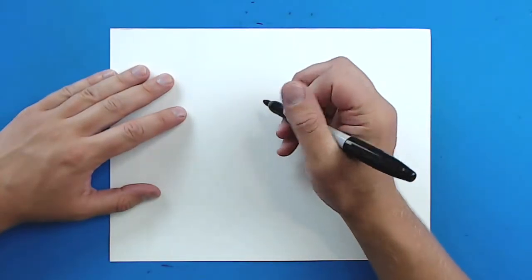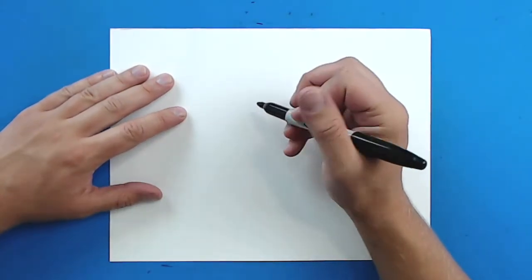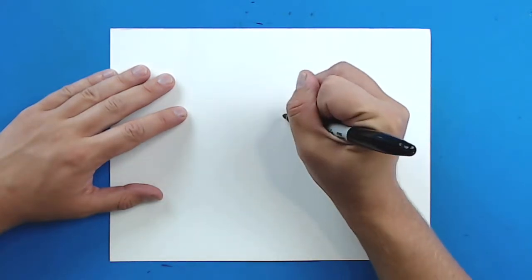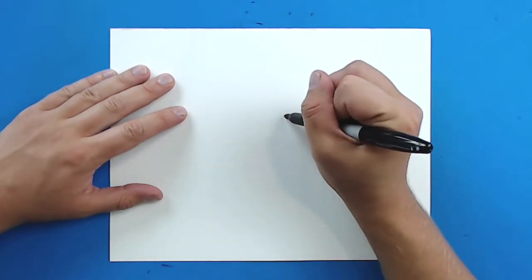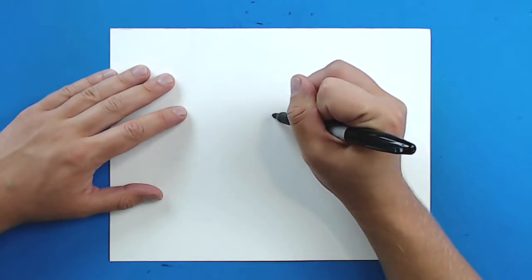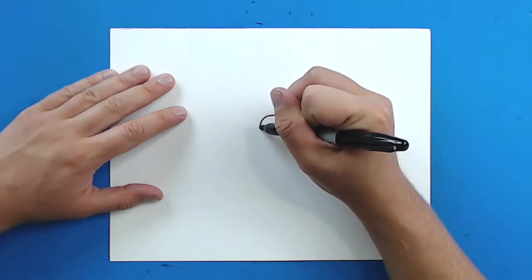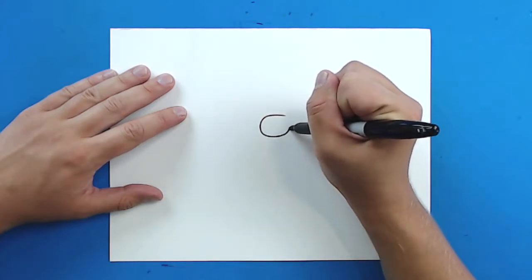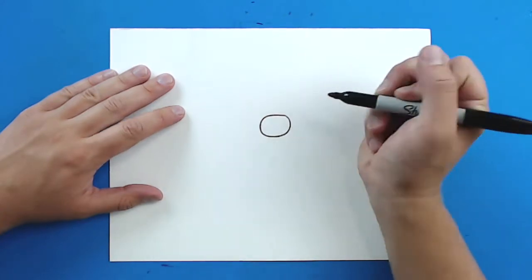To start off with the bow, you're going to begin with the center and we just want to make kind of an oval shape. It can almost be a little bit squarish too. So I'm just going to draw a line that goes around like this, just like that.